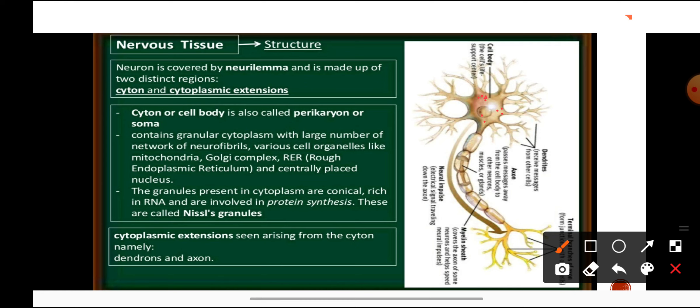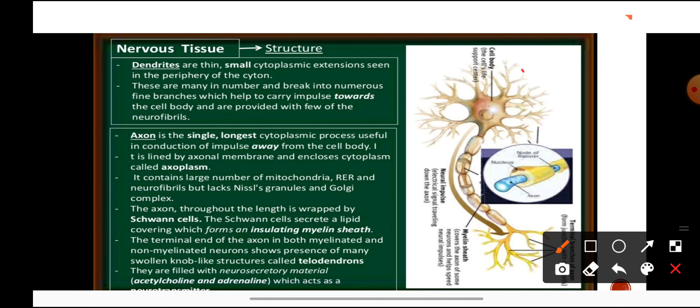The cytoplasmic extensions arising from the cyton are the dendrites and the axon. Dendrites are very thin, small cytoplasmic extensions seen in the periphery of the cyton, many in number, which break into numerous fine branches and carry impulse towards the cell body. The axon is the single, longest cytoplasmic process, useful in conduction of impulse away from the cell body.